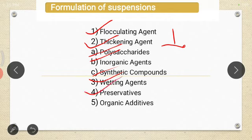Next, preservatives. A suitable preservative is needed to preserve the suspension against bacterial growth. Examples of preservatives avoid the growth of microorganisms or bacteria. The preservative selected should be effective against a wide range of microorganisms. Examples include benzoic acid, sodium benzoate, methylparaben, and propylparaben. These are the commonly used preservatives in suspensions.